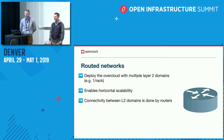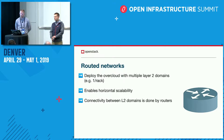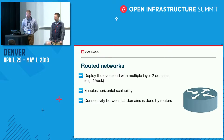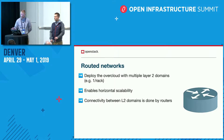The routed network support goes hand-in-hand with the spine-leaf support, but spine-leaf is not specific to edge deployments. If you have a spine-leaf network layout in a single data center, you can still use routed networks for your deployment. Connectivity between L2 domains is handled by routers, and for PXE provisioning we use DHCP relay to forward requests across the L2 domains.